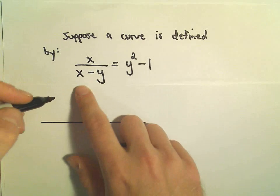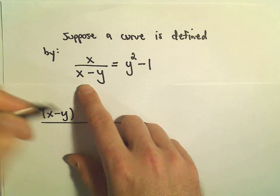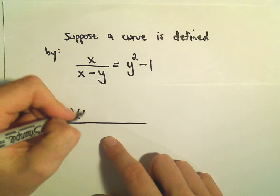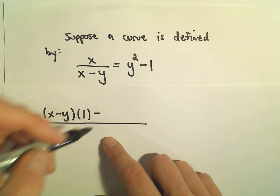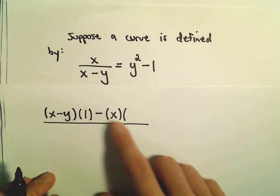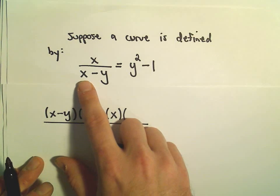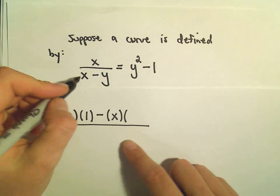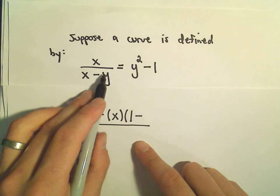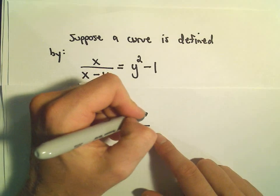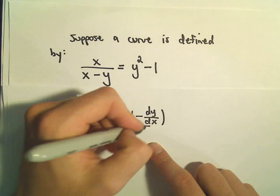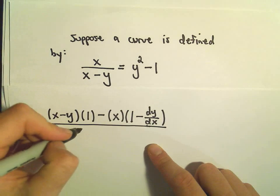So the quotient rule says you get whatever's in the denominator, and then we take the derivative of what's in the numerator, so the derivative of x will just be 1. Minus, then we leave the stuff in the numerator alone, and then we take the derivative of the denominator, so the derivative of x is just 1, and the derivative of negative y will be negative dy over dx, and then that's all over the denominator squared.